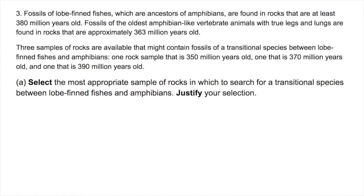It says that the lobe-finned fishes were found in rocks that are at least 380 million years old, and their descendants, the amphibians, are found in rocks that are 363 million years old. So if we want to find a species that has a form intermediate between a fish and an amphibian, then we need to look between those two time marks, and that's going to be 370 million years old. It's between 380 and 363. The other two are outside of that range.